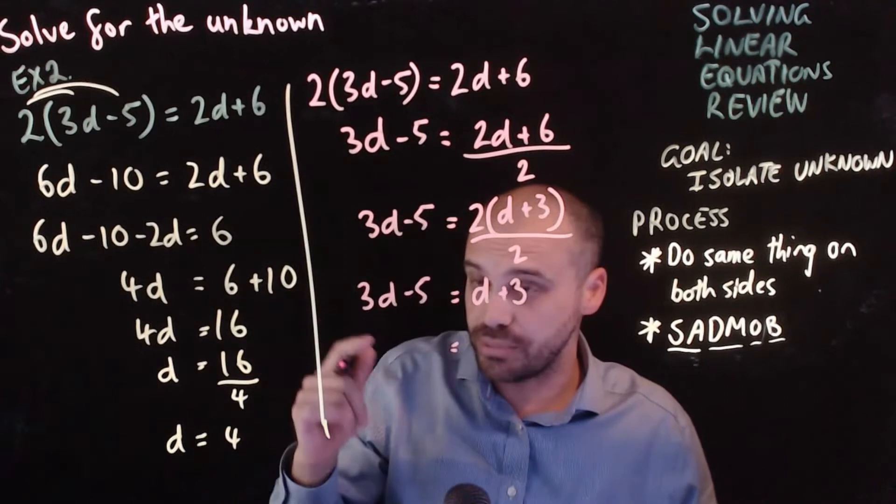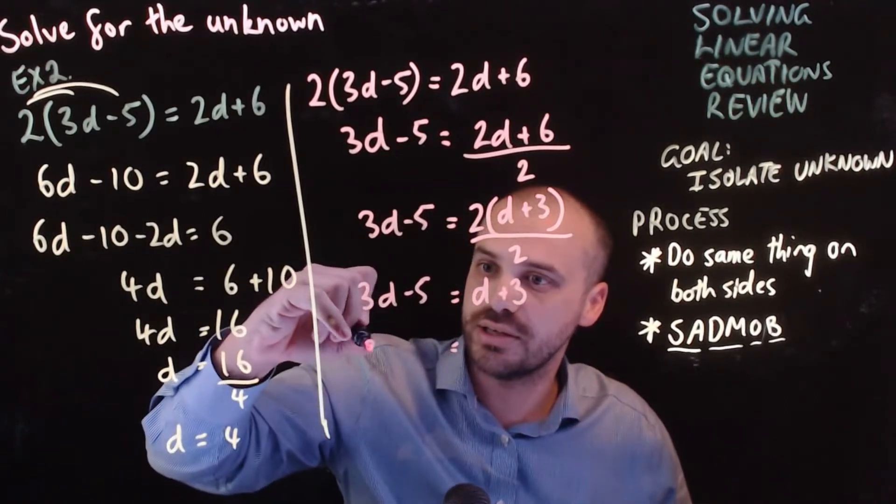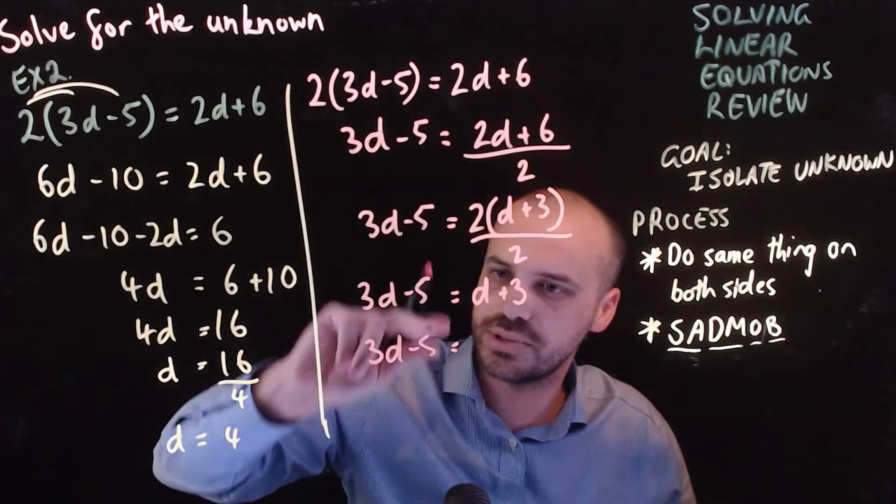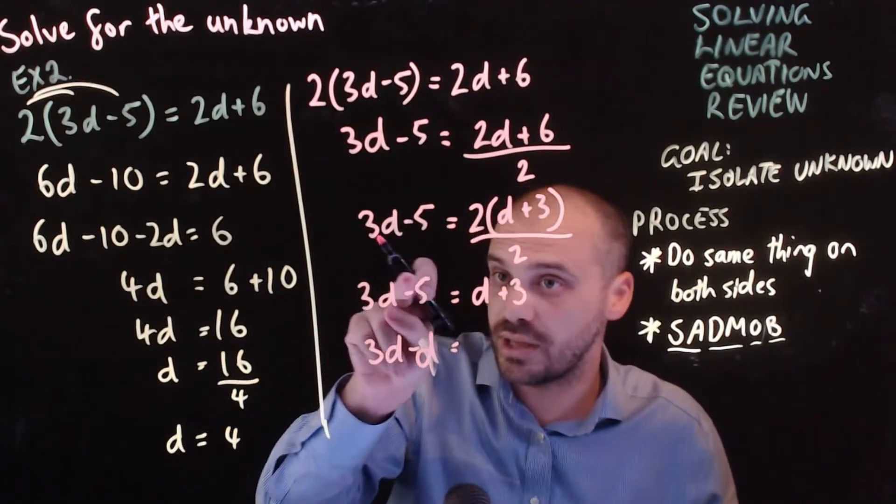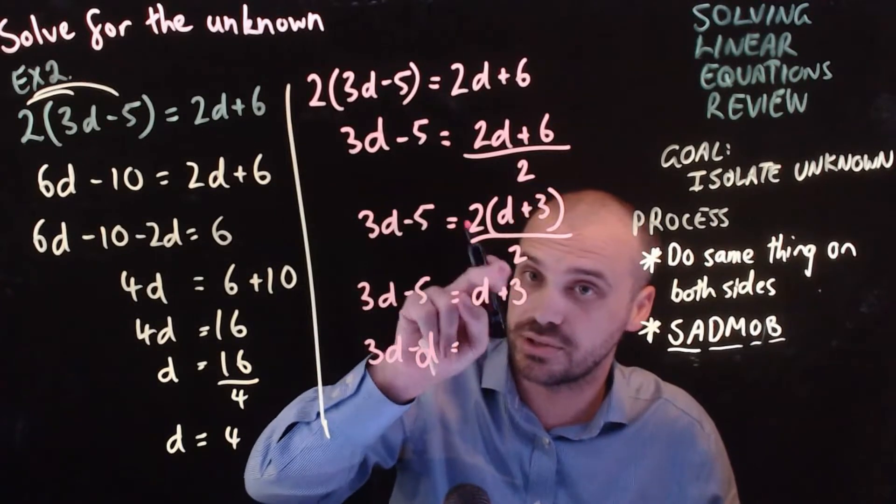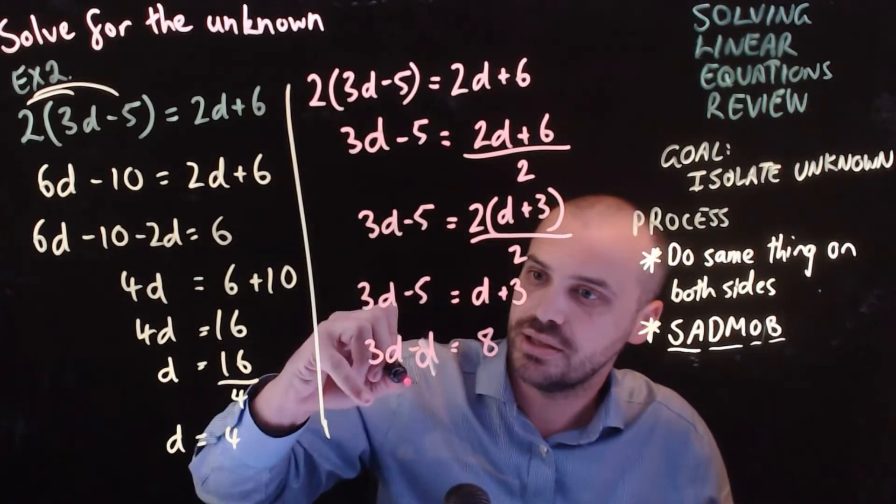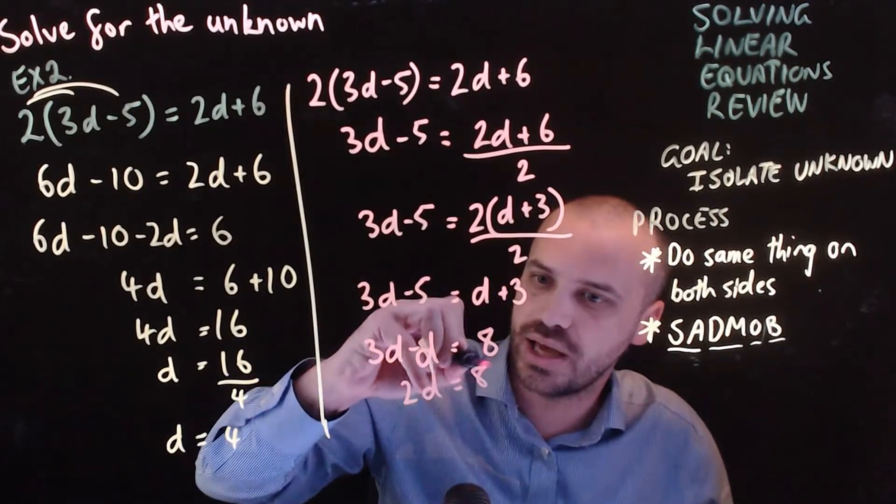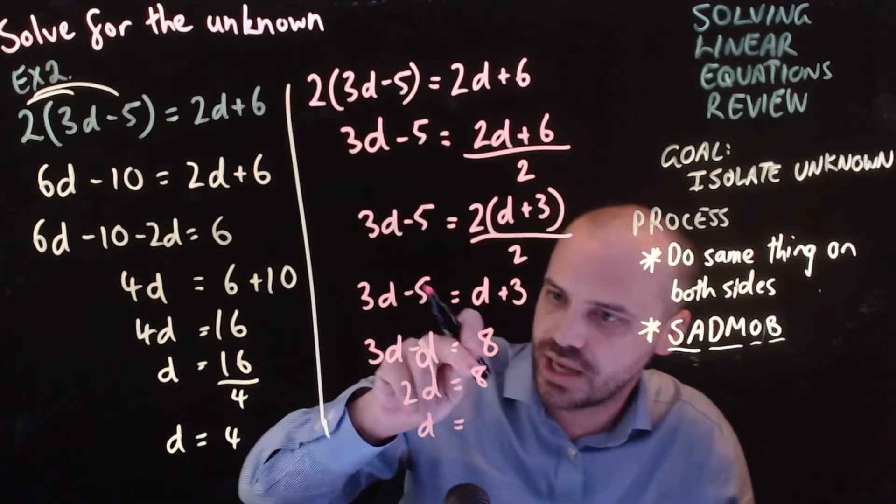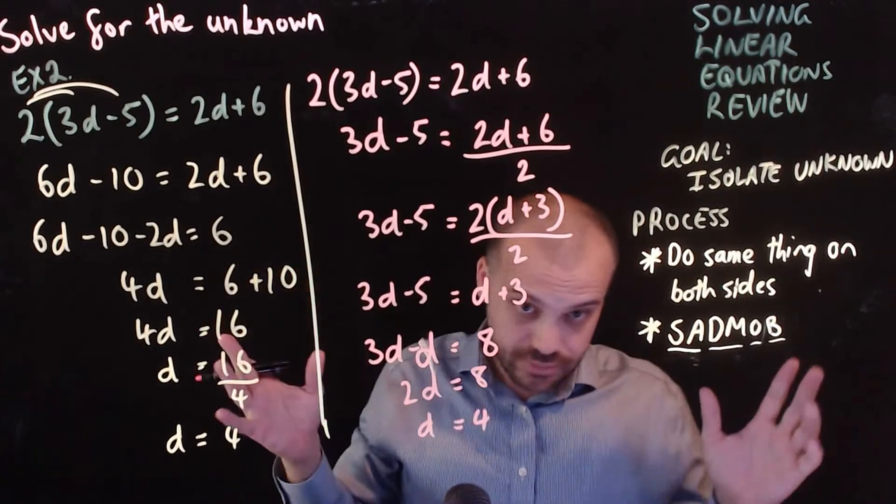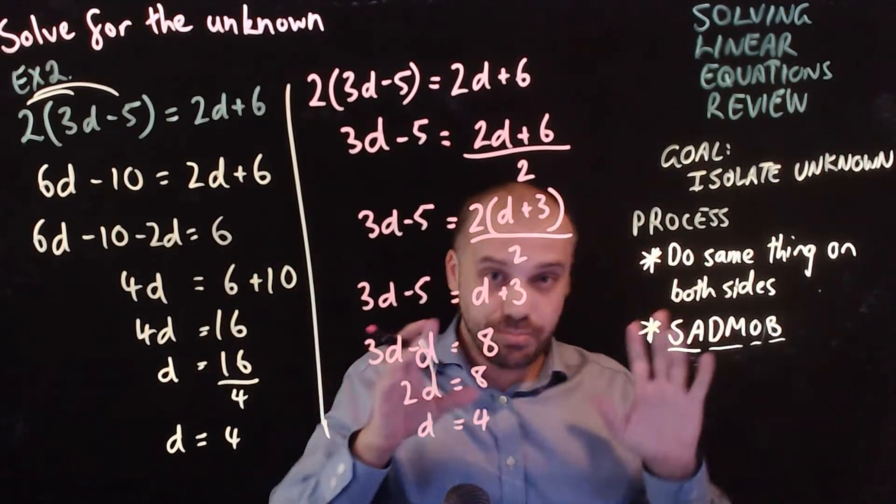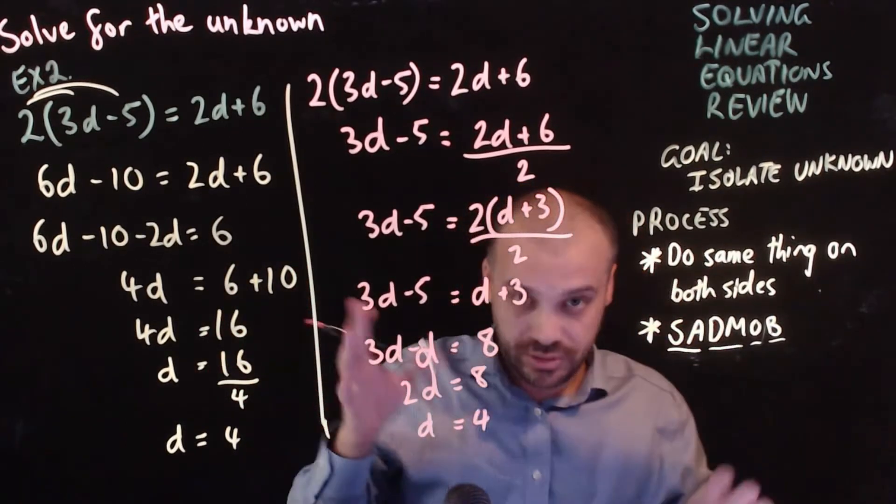Subtracting d from both sides, I get 3d minus d. Oops, that's a d. And adding 5 to both sides, that negative 5 will disappear, and that's 3 plus 5 makes 8. 2d equals 8, and d equals 8 divided by 2, which is 4. Same answer, two different ways. As long as you don't break any mathematical rules, you'll get to the...